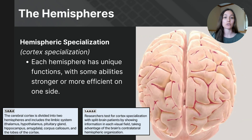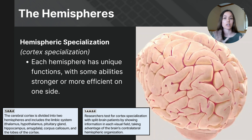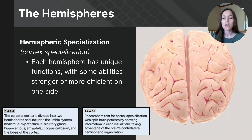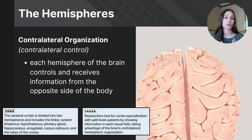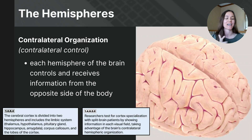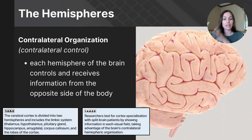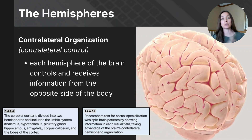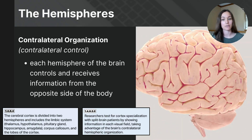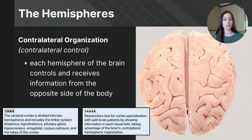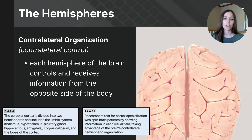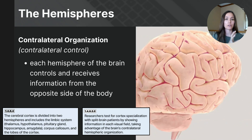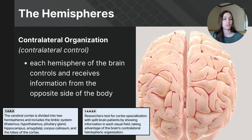Hemispheric specialization means that certain cognitive processes and behaviors are housed in or more efficiently controlled by one hemisphere over the other. Another important concept related to the hemispheres is contralateral hemispheric organization, which means that one hemisphere controls the opposite side of the body. The left hemisphere governs motor and sensory functions of the right side of the body, and motor signals from the left hemisphere cross over in the brainstem to activate muscles on the right side.